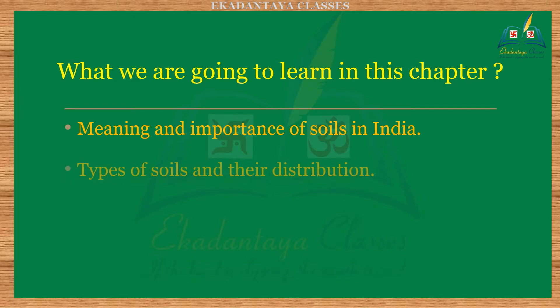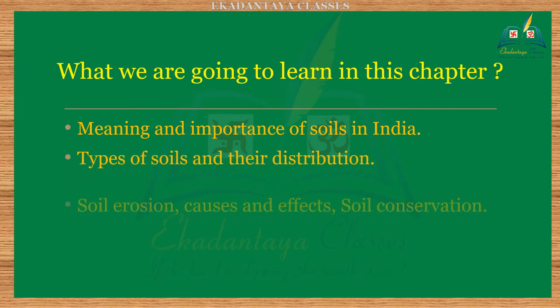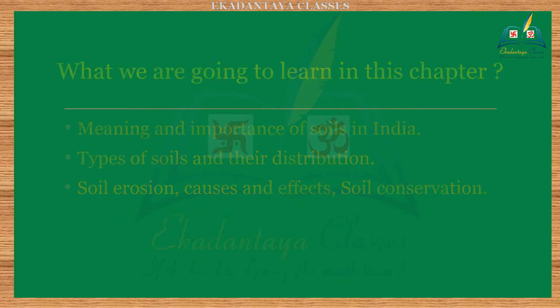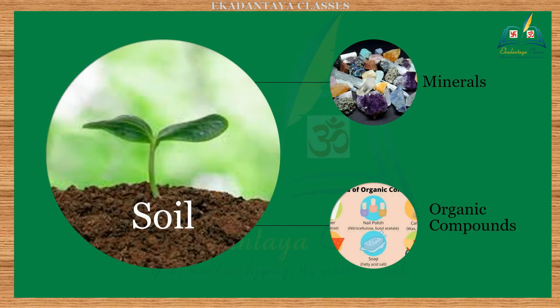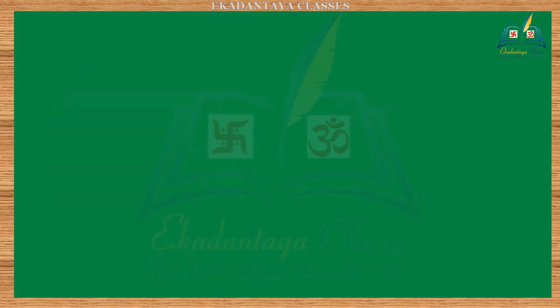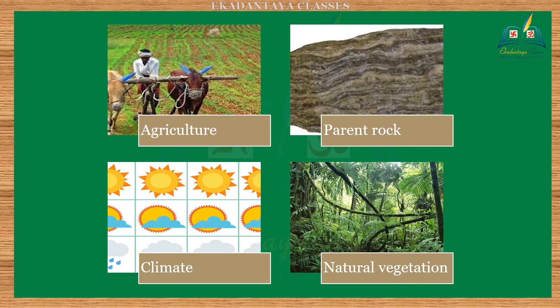Meaning and importance: soil is the thin surface layer of the earth comprising closely intermixed mineral and organic substances. It is a very important natural resource of India because agriculture is the main occupation of the people, and agricultural production is basically dependent on the fertility of the soil. Soil formation in India is mainly related to the parent rock, relief, climate, and natural vegetation.